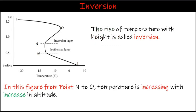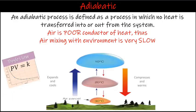In this figure, from point N to O, temperature is increasing with increase in altitude. An adiabatic process is defined as a process in which no heat is transferred into or out from the system. Mixing of air is an adiabatic process, as air is a poor conductor of heat, so air mixing with the environment is very slow.